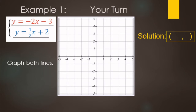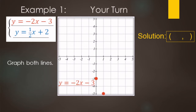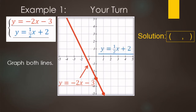We're going to graph both lines. For the red equation, the y-intercept is negative 3, right there. The slope is negative 2, so rise over run is down two, right one. Draw the line that represents all the ordered pairs that make this equation true.